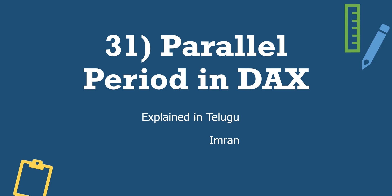Same Period Last Year — for example, year 2022 vs 2021, or sales vs COVID cases — is limited to one year shift. It can be one month last, one day last, one quarter last, or one year last, but always just one unit back.